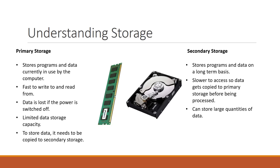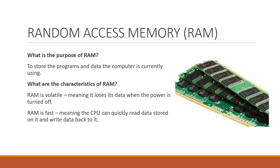Let's take a look now at the actual hardware that is categorized as primary storage. First we have Random Access Memory, or RAM as it is usually abbreviated to. The purpose of RAM is to store all the programs and data the computer is currently using. For example, you probably have your operating system running, your web browser loaded to watch this video, and maybe a word processor open to take notes. Everything that you see in front of you will be currently stored in RAM, and it will either be sending data to the central processing unit to be processed, or receiving and storing data that has been processed.